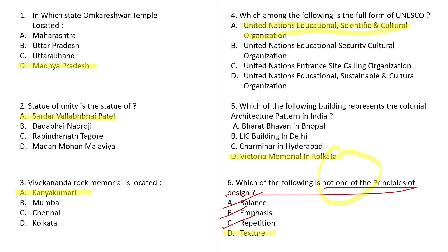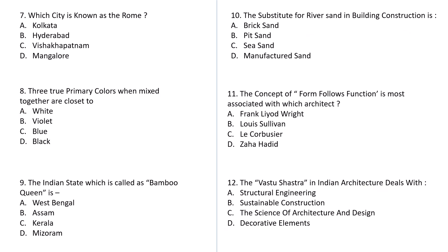Question number 7: Which city is known as the Rome of India? Options: A: Kolkata, B: Hyderabad, C: Visakhapatnam, D: Mangaluru. You should know about this — the correct answer is D: Mangaluru.